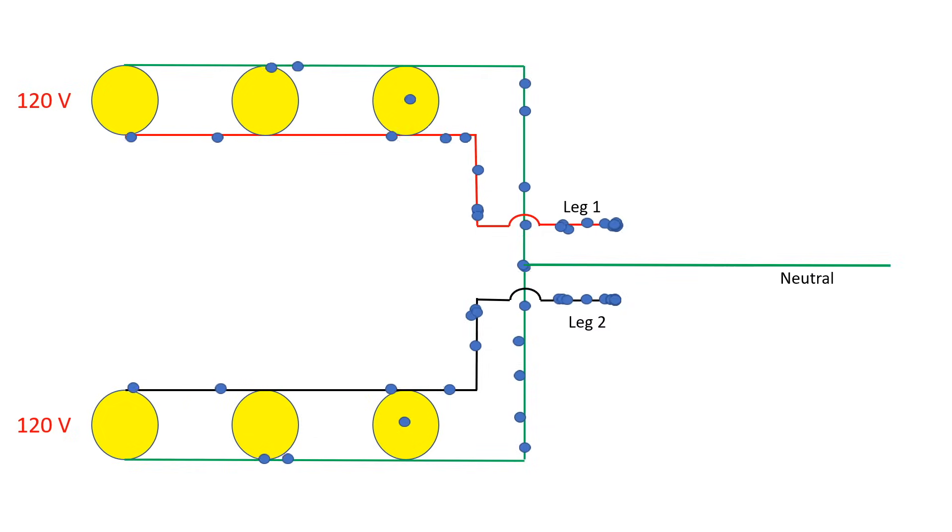Now, you might notice that there's no current flowing on the green neutral wire on the right side of the diagram. This is because you have balanced loads on each leg, and since they're 180 degrees out of phase, the currents basically cancel each other out, and you have no current flowing on the neutral wire when the loads are perfectly balanced.